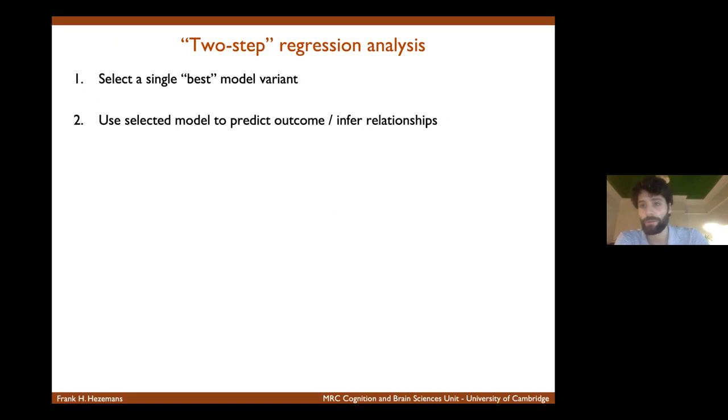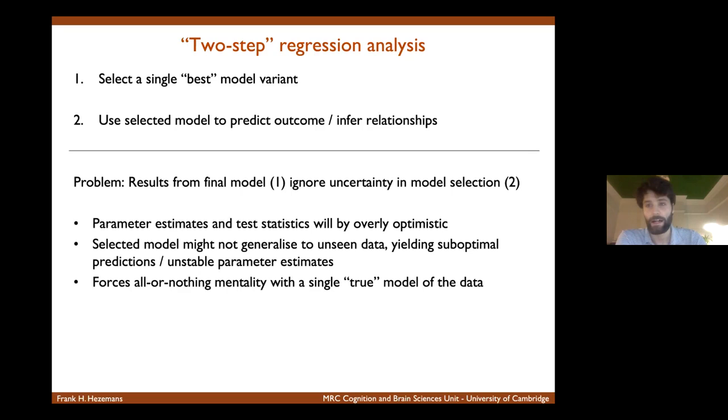So to solve this model selection problem, one approach which is probably the most common is to first perform some kind of model selection. So you use some kind of statistical criteria to find one best model. And then in a second step, you ditch all of the other models and using just that one selected model, you perform your statistical inferences. So you determine the relationships between predictors and outcomes and you make predictions on your outcome variable. And although this is a common approach, it's not really ideal because your results in the second step are conditional on the first step, the model selection.